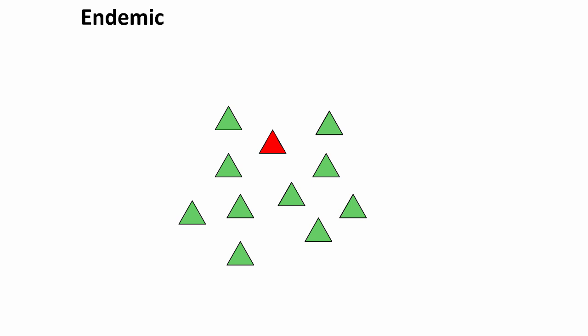Normally, each year, some of these people, indicated in red, come down with the flu. If the flu normally strikes a certain percentage of the population, and this year the rate of the flu is what is expected, we say that the flu is endemic to that population.